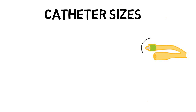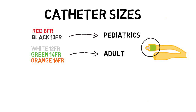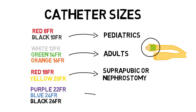Catheters come in a variety of sizes, and the diameter is referred to as French. They are usually color-coded based on French size. 8 French and 10 French are typically pediatric catheters. As you increase in size, 12, 14, and 16 French are the common sizes for adult indwelling urethral catheters. 18 and 20 French can be used for suprapubic or nephrostomy tubes. At the larger end of the spectrum, 22, 24, and 26 French are used for evacuation of debris and/or irrigation.